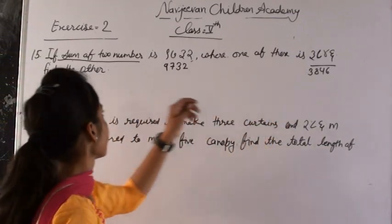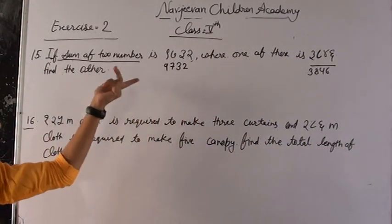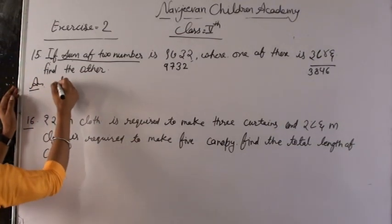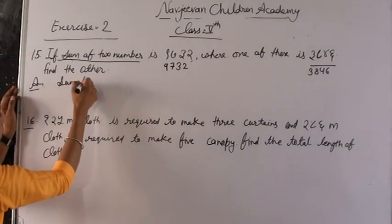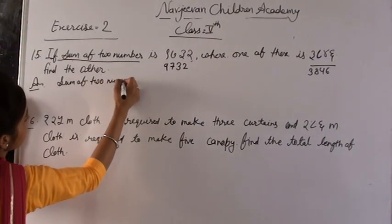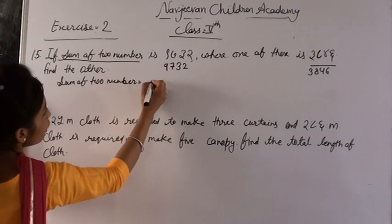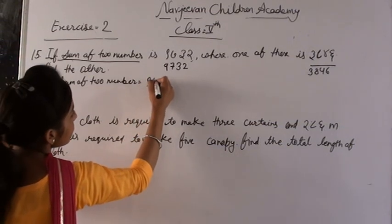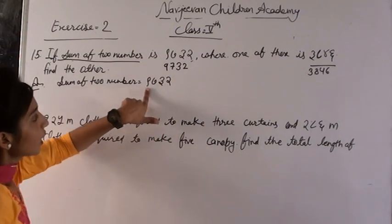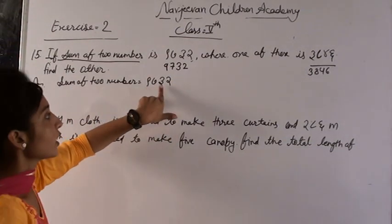This is our first number. Next, the second number. How do you see this? Sum of two numbers. 9,732.